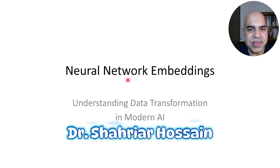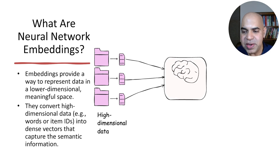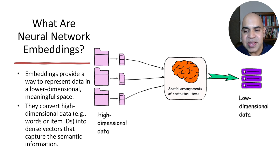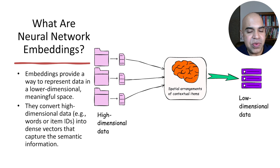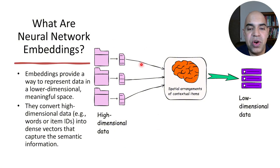Today we are going to discuss neural network embeddings. Neural network embeddings are low-dimensional representations of high-dimensional data. They are widely used to map categorical features into a space where similar or contextual items are closer together, making it easier for a neural network to process them. If you have high-dimensional data like text with many words, you can construct a neural network embedding space where contextually connected words will be in the neighborhood of each other.